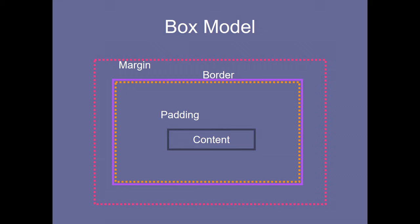When talking about the box model, you should know the meaning of margin, border, padding, and content. Content is at the center. Inside the border, whatever space there is, that is called padding. For example, in a bedroom, the distance you keep the bed from the wall is the padding — the wall is the border. The outer boundary of the room is the border. Margin is the space between one box and another, like the space between two houses.